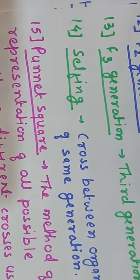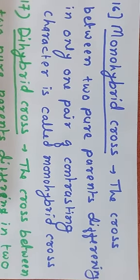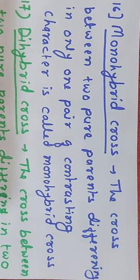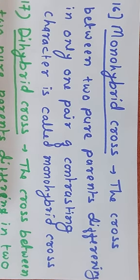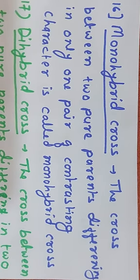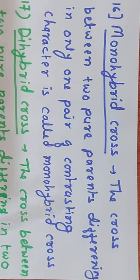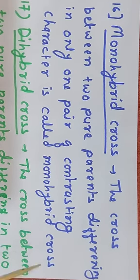Next terminology: monohybrid cross and dihybrid cross. Mendel performed crosses to check inheritance, and based on these he used the terms monohybrid cross, dihybrid cross, and trihybrid cross. Monohybrid cross means a cross between two pure parents differing only in one pair of contrasting characters, or a cross made to investigate one character for inheritance at a time.